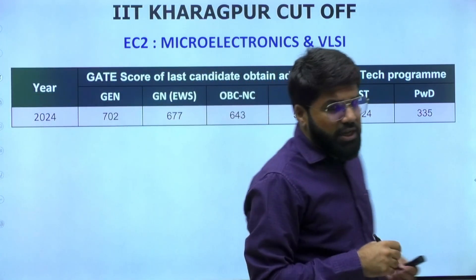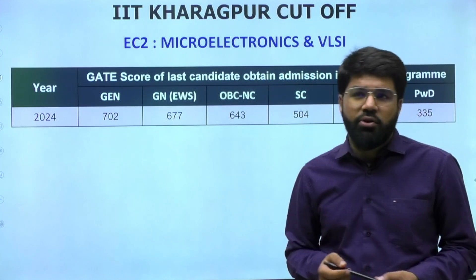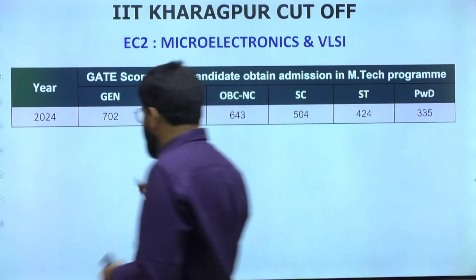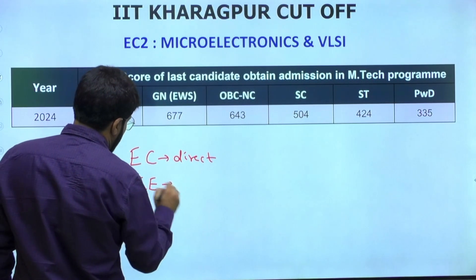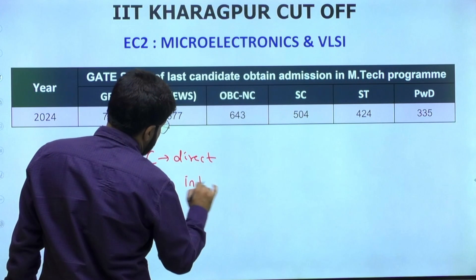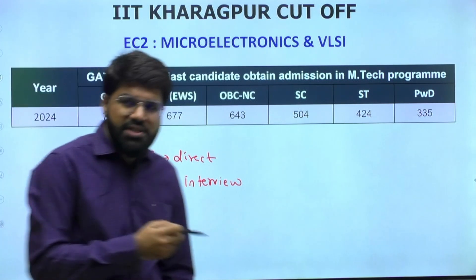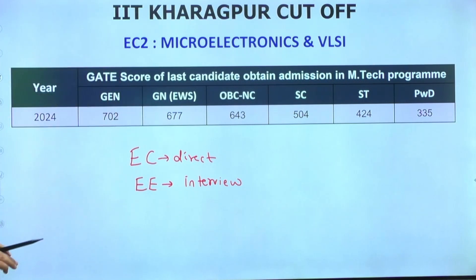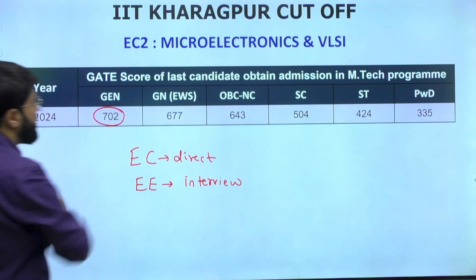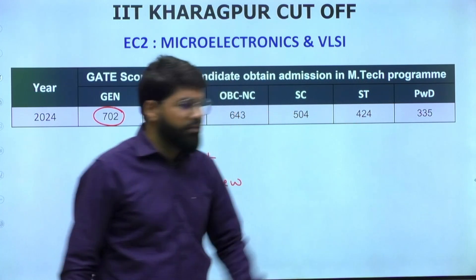The courses are offered by the EC department. The first top choice for students these days is M.Tech VLSI - Microelectronics and VLSI. Any courses offered under EC are offering direct admission, while courses under the EE department involve an interview as well. I've got the data for the immediate previous year, that is the 2024-25 academic year. For Microelectronics and VLSI, the GATE score of the last candidate who obtained admission - that is the cutoff - is 702 in General category, 677 in EWS, 643 in OBC Non-Creamy Layer, 504 in SC, 424 in ST, and 335 in PWD.